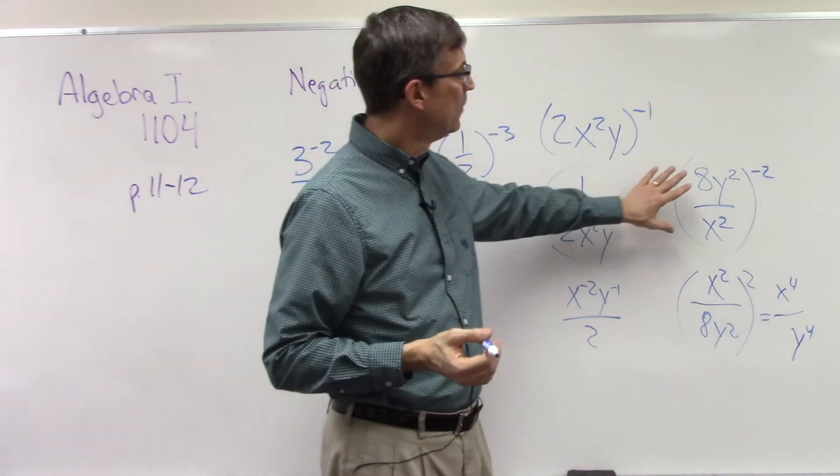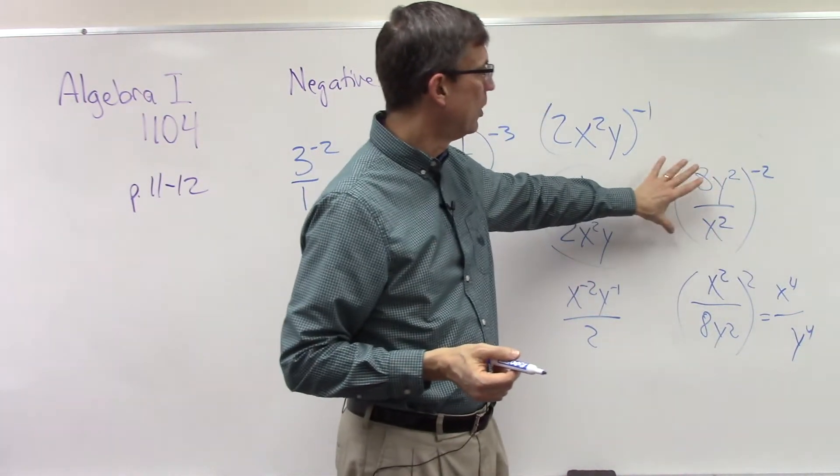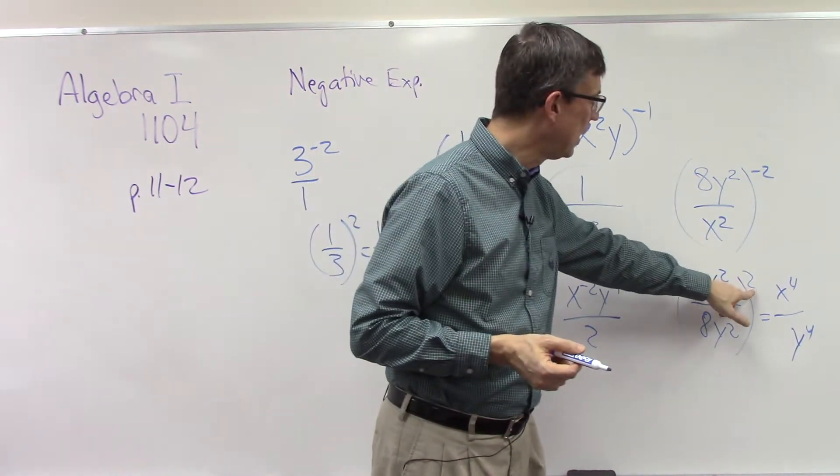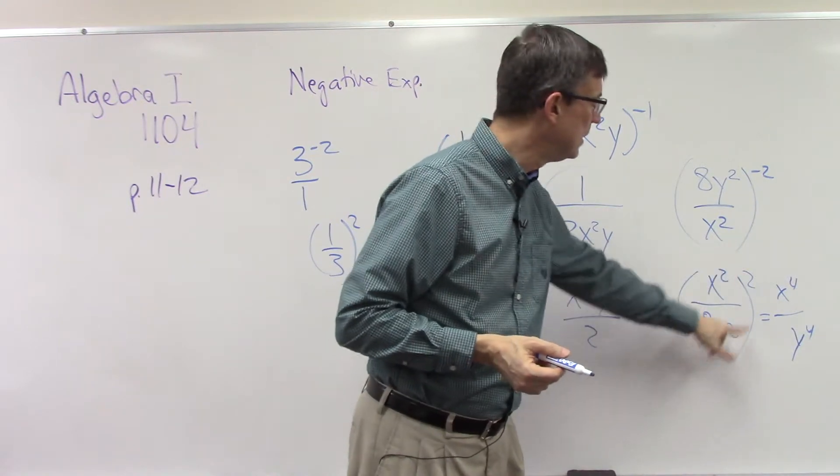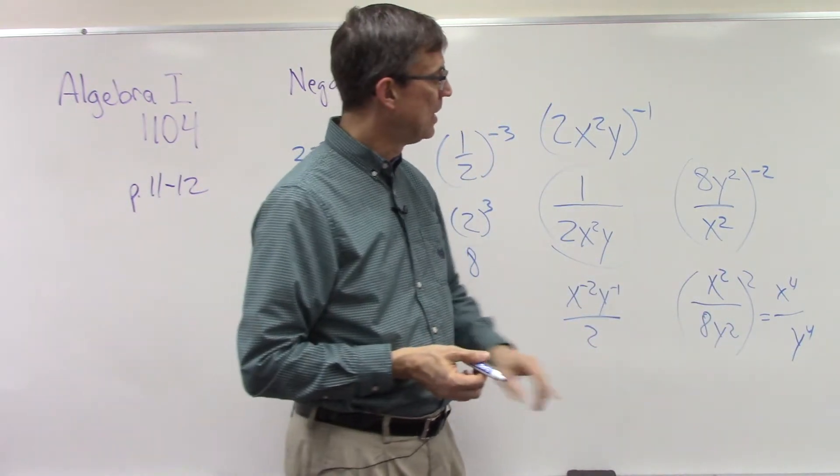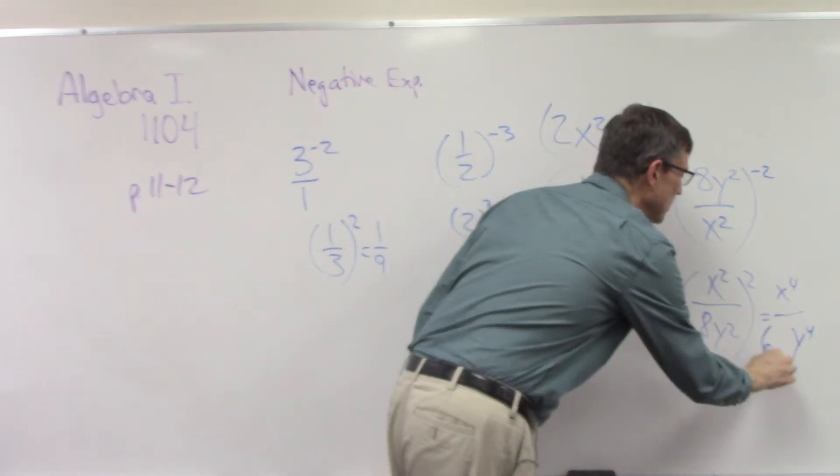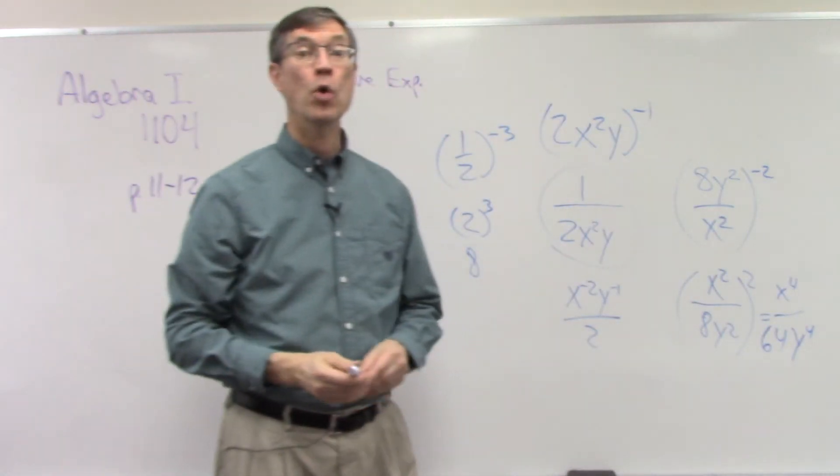But think first of getting rid of the negative part by flipping it, and then the next step is to apply the positive exponent to everything inside the parentheses, including making the 8 squared, which is 64.